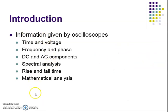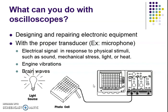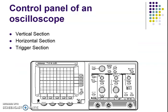The CRO can provide information about time, voltage, frequency, phase, DC and AC components, spectral analysis, rise and fall times, and mathematical analysis. We can also connect a sensor output to the CRO for analysis — for example, a photocell detects light intensity and generates a voltage output that can be measured on the oscilloscope.